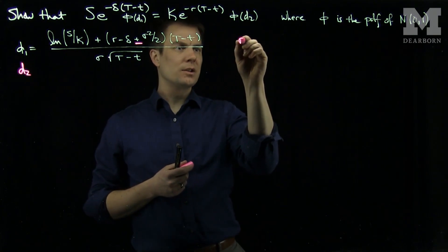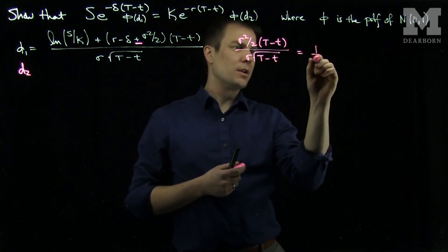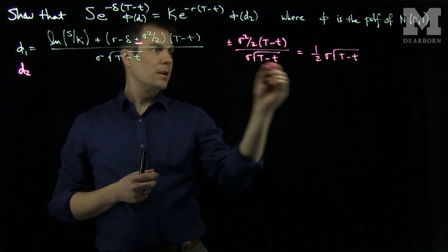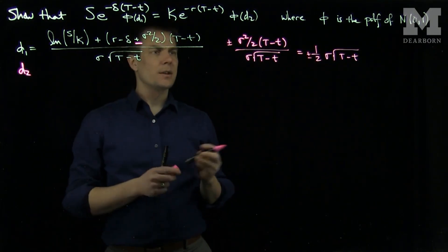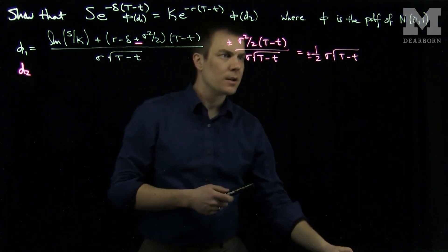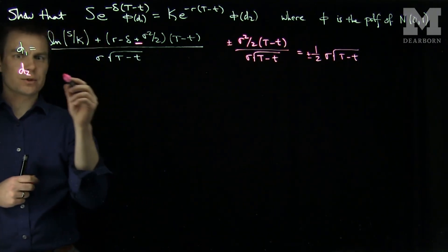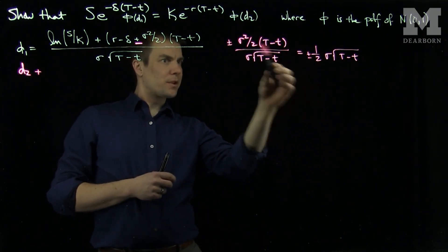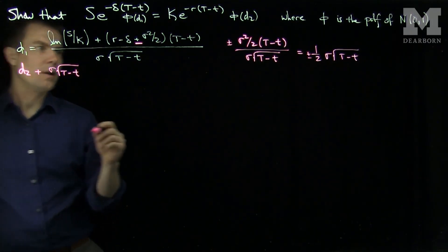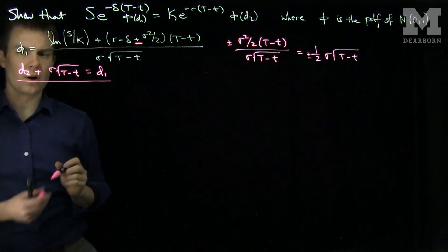Note that σ²/2·(T-t) divided by σ√(T-t) equals (1/2)·σ√(T-t). So by putting a plus or minus on that term, we get d1 or d2 respectively. The relationship between d1 and d2 is: d2 plus σ√(T-t) equals d1. That is our key relationship between d1 and d2.